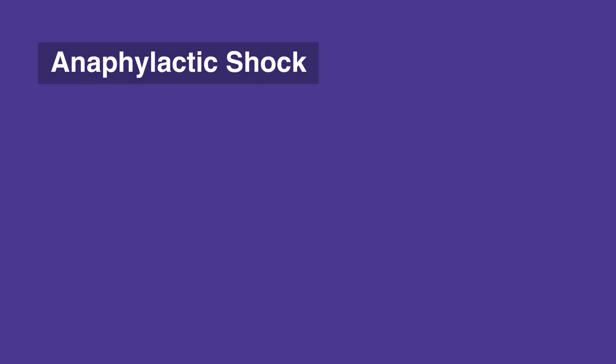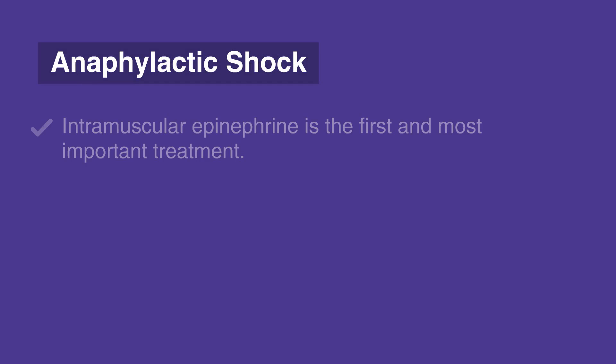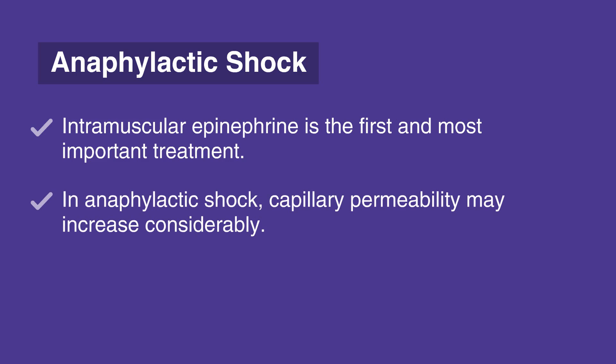For anaphylactic shock, intramuscular epinephrine is the first and most important treatment. In severe cases, a second dose of epinephrine may be needed, or intravenous administration may be required. Crystalloid fluid can be administered judiciously. Remember that in anaphylactic shock, capillary permeability may increase considerably.